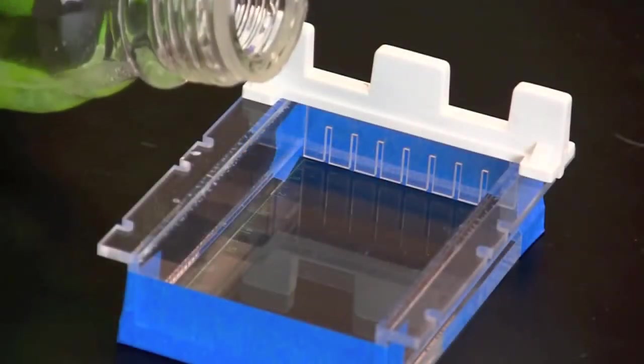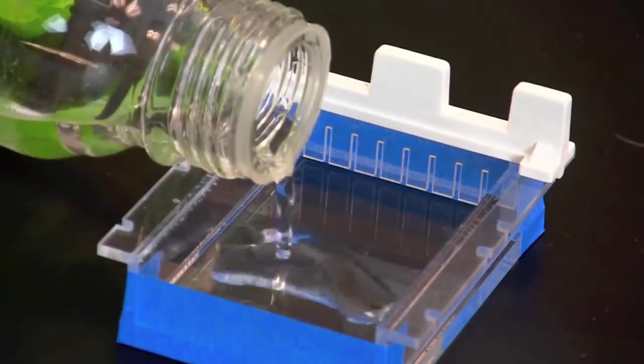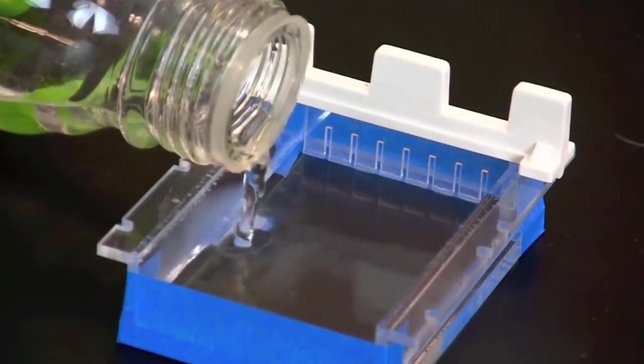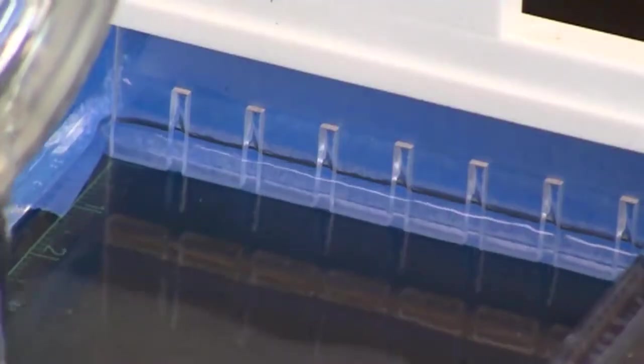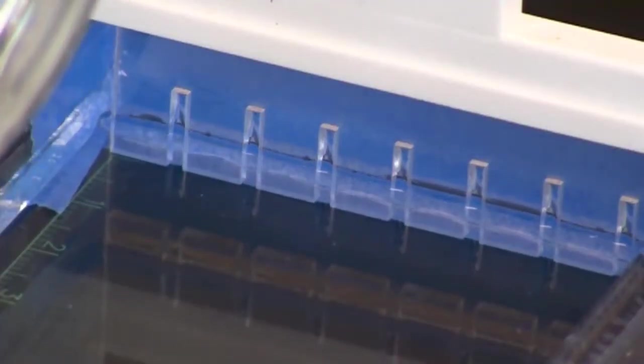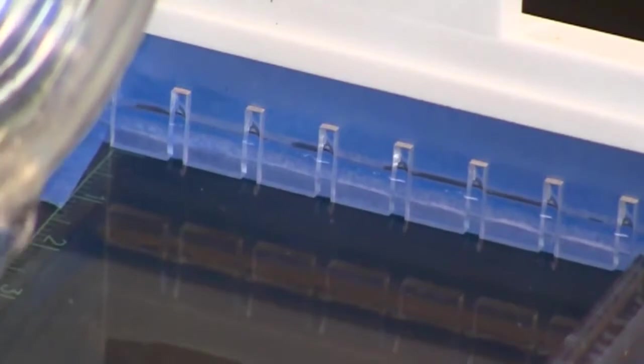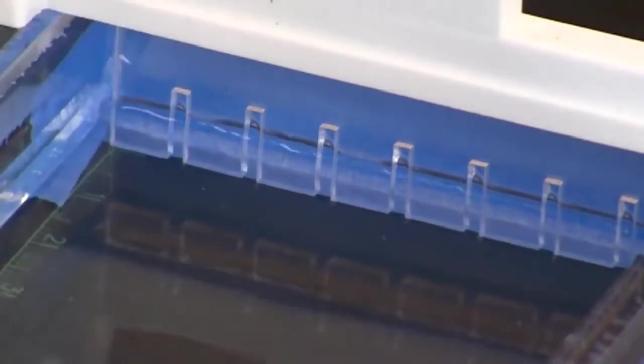Before pouring the molten agarose, make certain that it has cooled to 55 degrees Celsius. Pour the agarose into the gel tray until the agarose comes to within 2-4 mm of the top of the teeth of the comb.